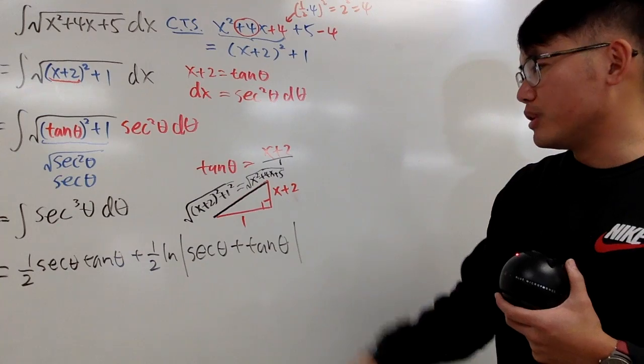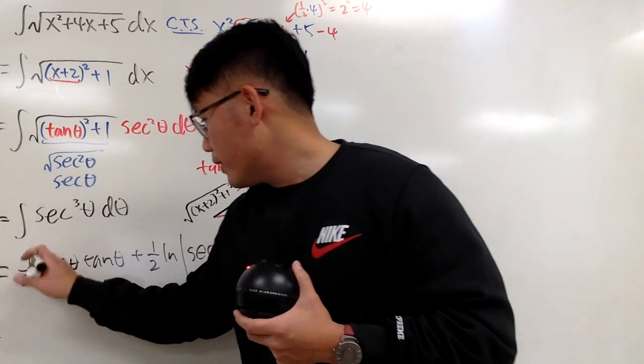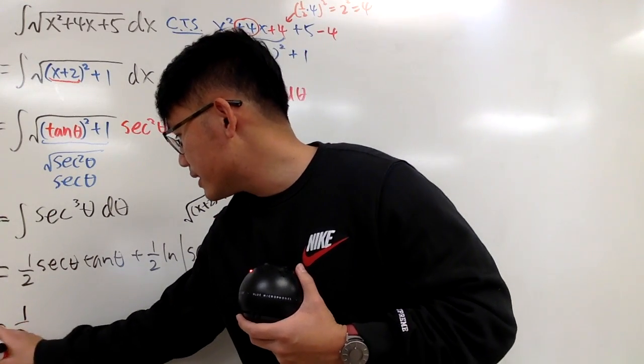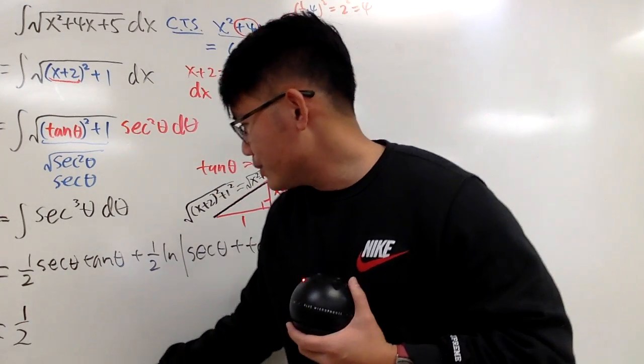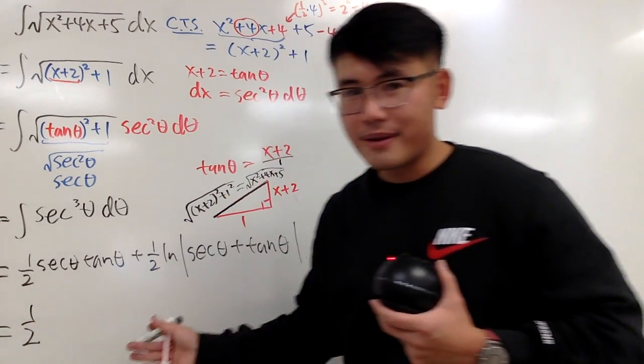Now, we'll just take this back to the x world. And as we can see, first we have 1 half. And then let's do the secant here first. Yeah. I want to just show you guys the equal sign. 1 half. Okay. Good.